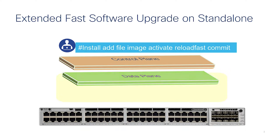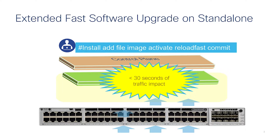After the routing protocol learns routes from the peers, it sends down the convergence signal to the platform code. The ASIC information is placed in a special memory block, and the platform code updates the data plane by flushing the cached updates to the data plane.